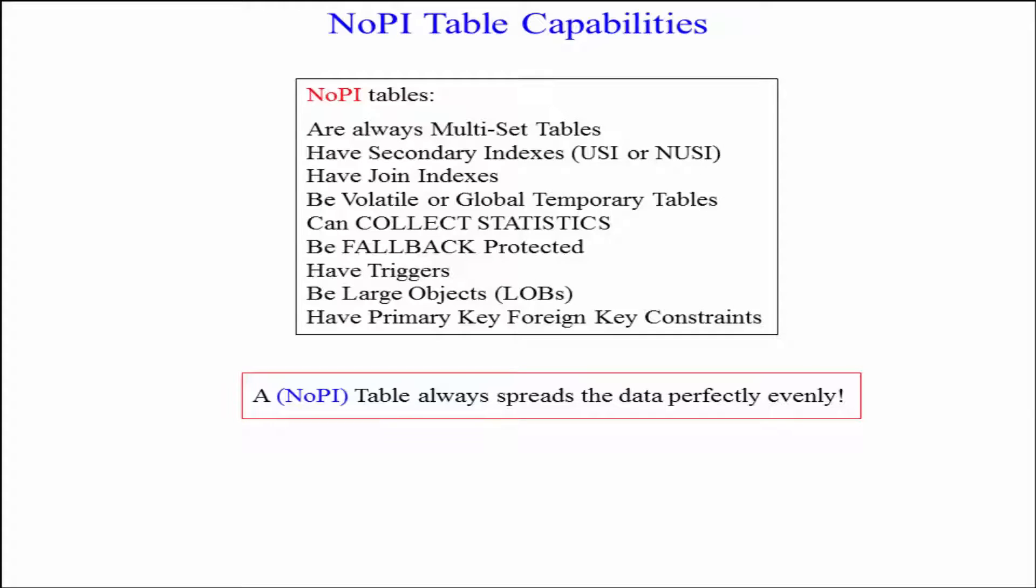No PI tables are always multi set tables. They're not going to check for any duplicate rows like a set table would have to do. No PI tables can have secondary indexes, OUSIs, NUSIs. They can have join indexes. They can actually be volatile or global temporary tables. You can collect statistics on them, have fallback, triggers. They can actually be LOBs or large objects and they can have primary key foreign key constraints. They're really very similar to the tables you're used to in Teradata. They just don't have a primary index.